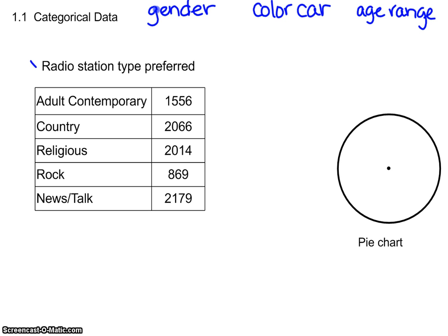Here we're looking at the categories for what radio station people prefer to listen to. People fall into different categories. First, we figure out the total — a total of 8,684 people surveyed, and those numbers fell into different categories. With categorical data, we find out what percent falls into each category. So we divide each value by 8,684, and we find about 18%, 24%, 23%, 10%, 25%.